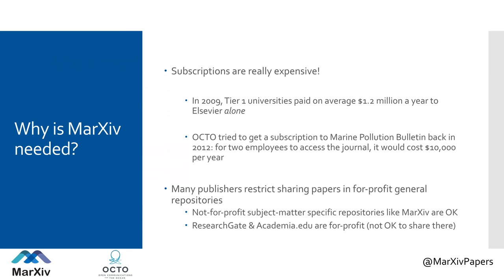Publishers love to restrict where preprints and postprints can be shared because having research freely available is a threat to their business model. Many publishers restrict sharing research papers in for-profit general repositories, so things like ResearchGate and Academia.edu are almost always prohibited. That's why we keep hearing that millions of papers are being dropped from ResearchGate due to copyright violations. Markive is not only not-for-profit, we're also a subject matter-specific repository, which is another loophole publishers use — so we are non-profit and subject matter-specific to ensure we can share all types of research.